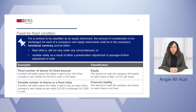Let's look at two simple examples. The first example shows a written call option settled in a fixed number of shares for a fixed amount of cash. This would be classified as equity because the exchange ratio is fixed at inception. The second example is of a written call option that is settled in a variable number of shares and so would be classified as a financial liability.